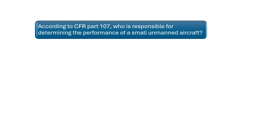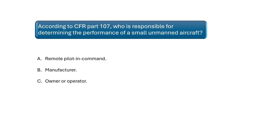According to CFR Part 107, who is responsible for determining the performance of a small unmanned aircraft? The remote pilot-in-command is responsible for determining the performance of a small unmanned aircraft. See Federal Aviation Regulations Part 107.19 and 107.49 for more information on the pilot-in-command's responsibilities when conducting a remote flight.